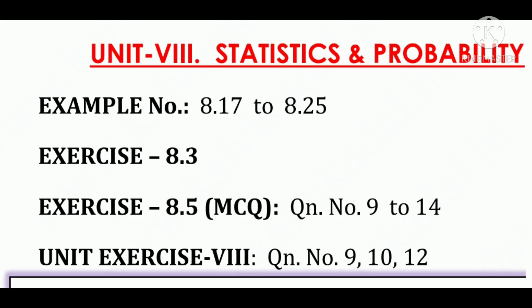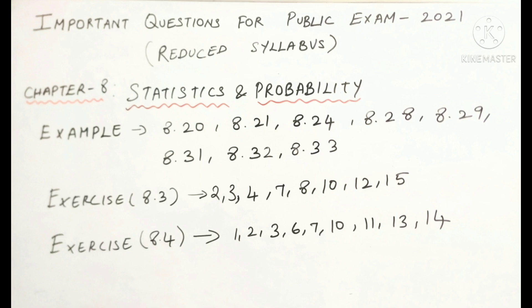Last chapter statistics and probability. Statistics fully omit. Probability is important. Example sum 8.17 to 8.25. Exercise 8.3 and 8.4 include. Exercise 8.5: 9 to 14. Unit exercise full probability fully cover. Example 8.20, 8.21, 24, 28, 29, 31, 32 and 33. Exercise 8.3: 2, 3, 4, 7, 8, 10, 12 and 15. Exercise 8.4: 1, 2, 3, 6, 7, 10, 11, 13 and 14.